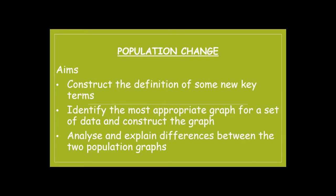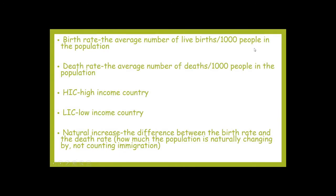So first off there are some key terms that we're going to be using today. A couple of them you'll be familiar with already, but others you may not. Birth rate and death rate — it's important that you remember the word 'average' in these two definitions. The birth rate is the average number of live births per thousand people in the population. The reason it has to be an average number is it makes it comparable from country to country, regardless of the size of the population or the area of the country. The death rate is the average number of deaths per thousand people in the population.